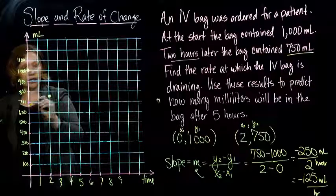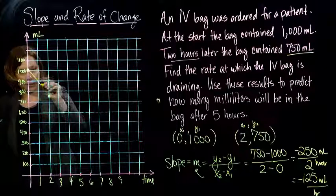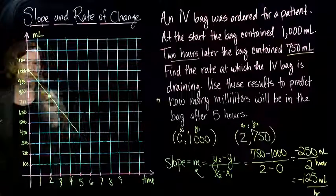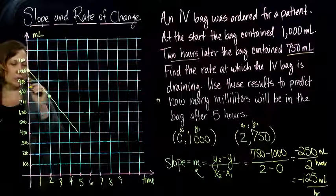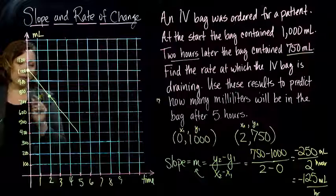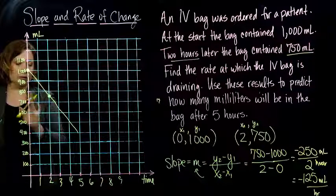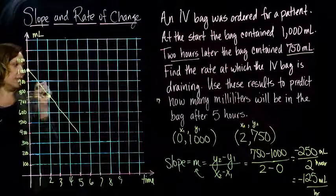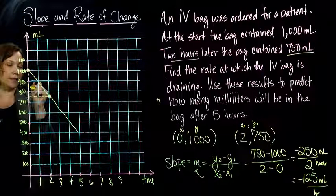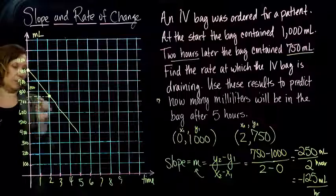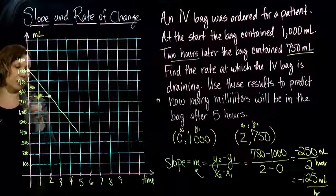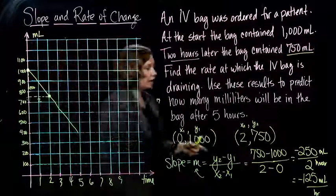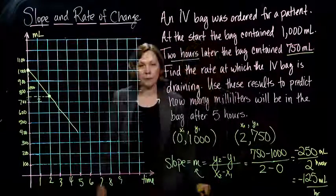And then after two hours, I'm at 750, so that's halfway between 700 and 800. And I look at the, if I draw a line between those, preferably a straight line, and I look at the slope, right, I went down 250, and I went right, in the negative direction 250, and I went forward two hours, which is exactly the same thing that we got there.